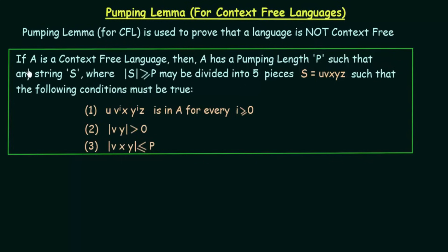Let's see how we can do it. If A is a context free language, then A has a Pumping Length P such that any string S where the length of S is greater than or equal to P may be divided into 5 pieces: S equals U, V, X, Y, and Z, such that the following conditions must be true. We say that if A is a context free language, then A will have a Pumping Length P.